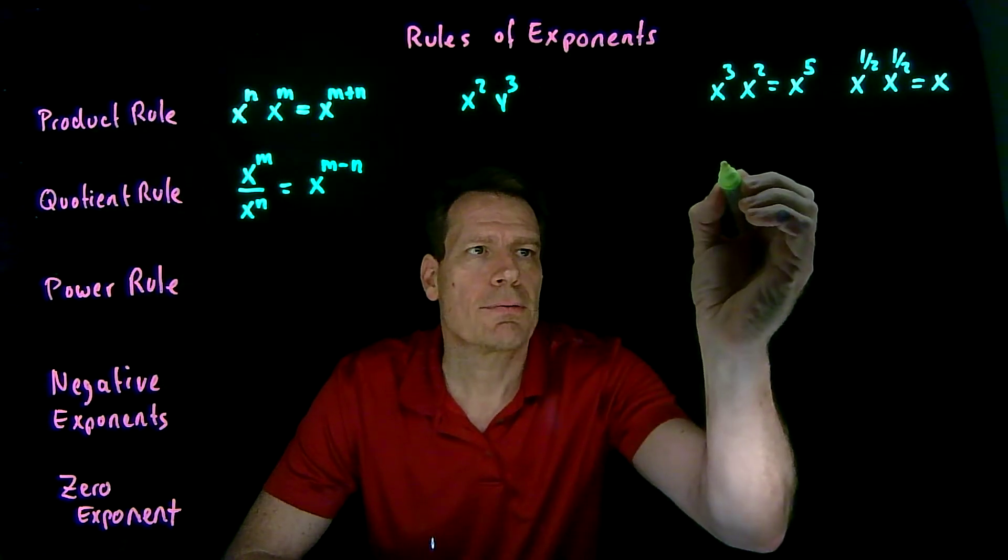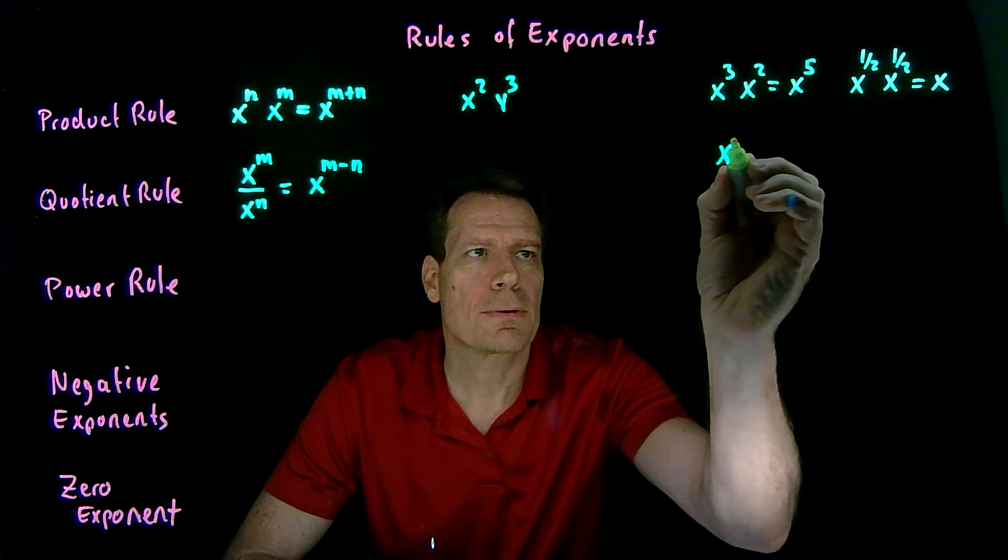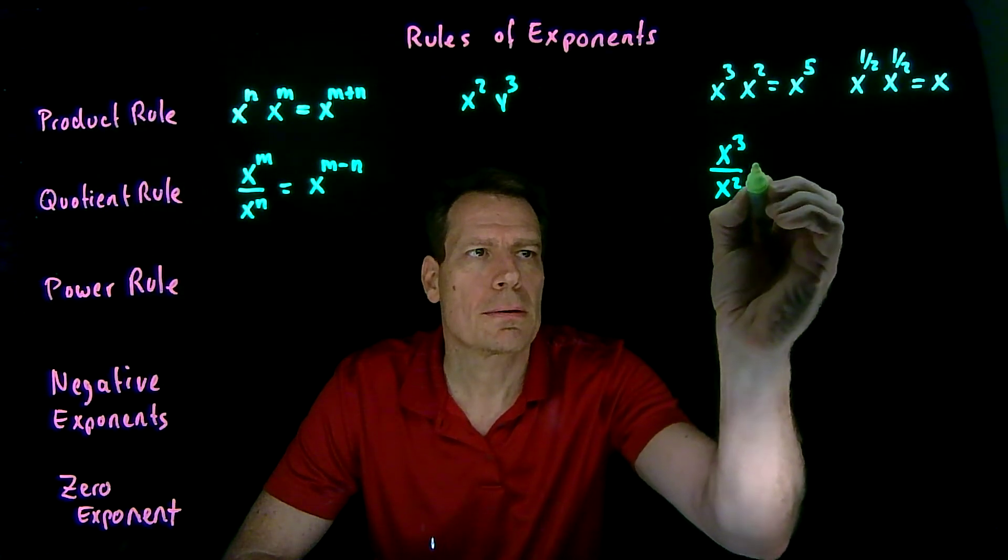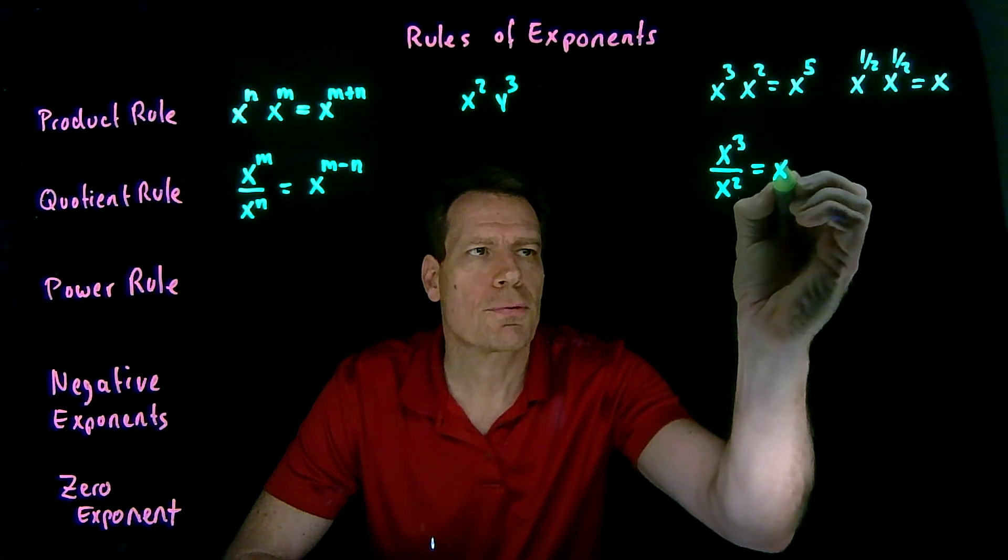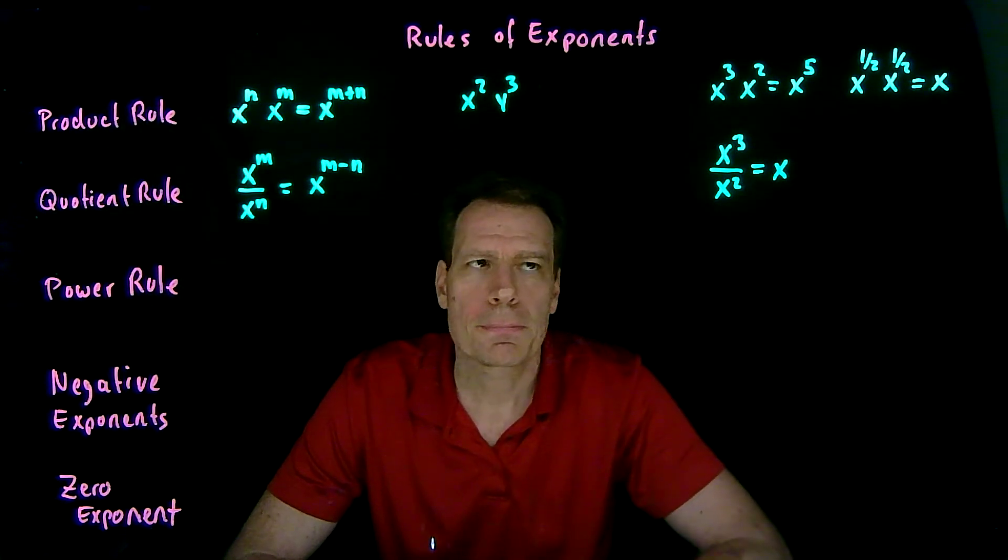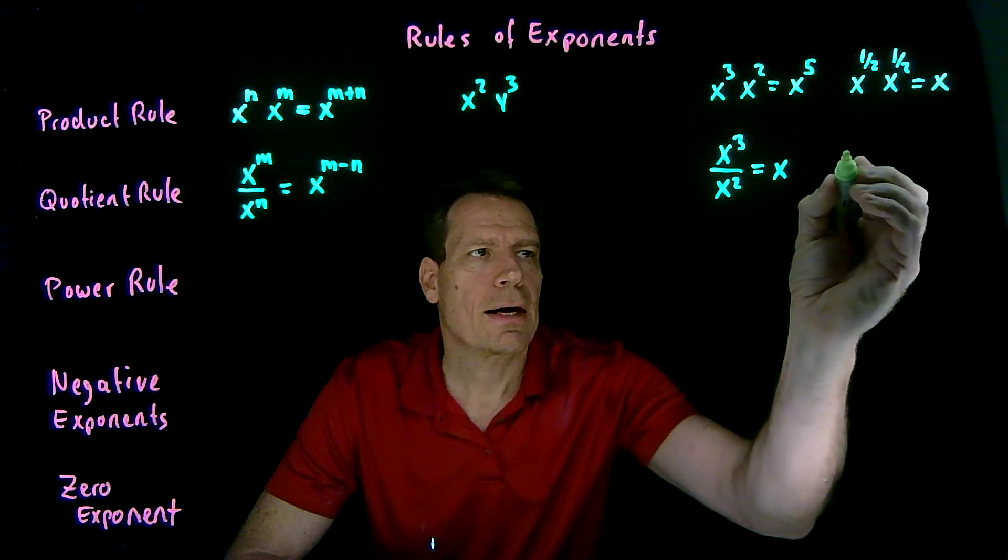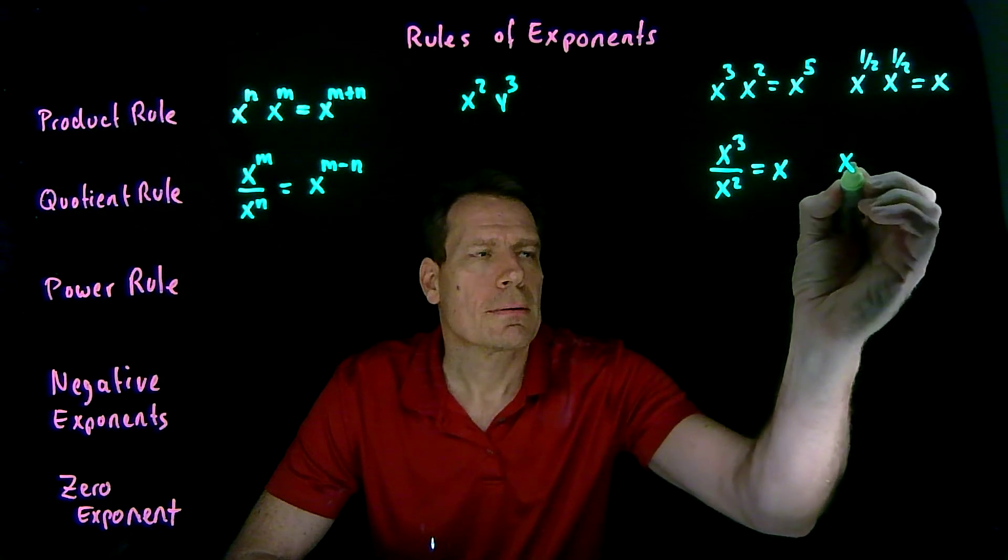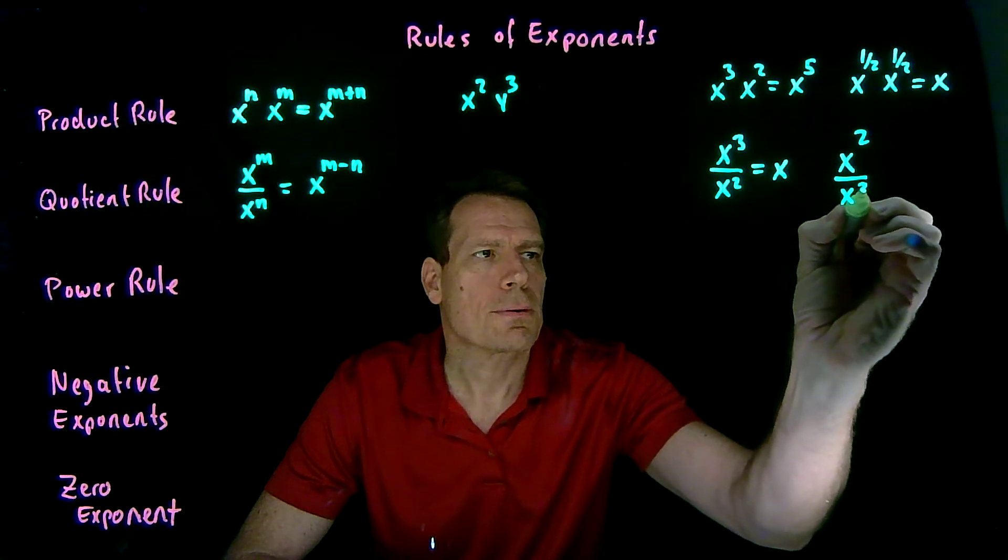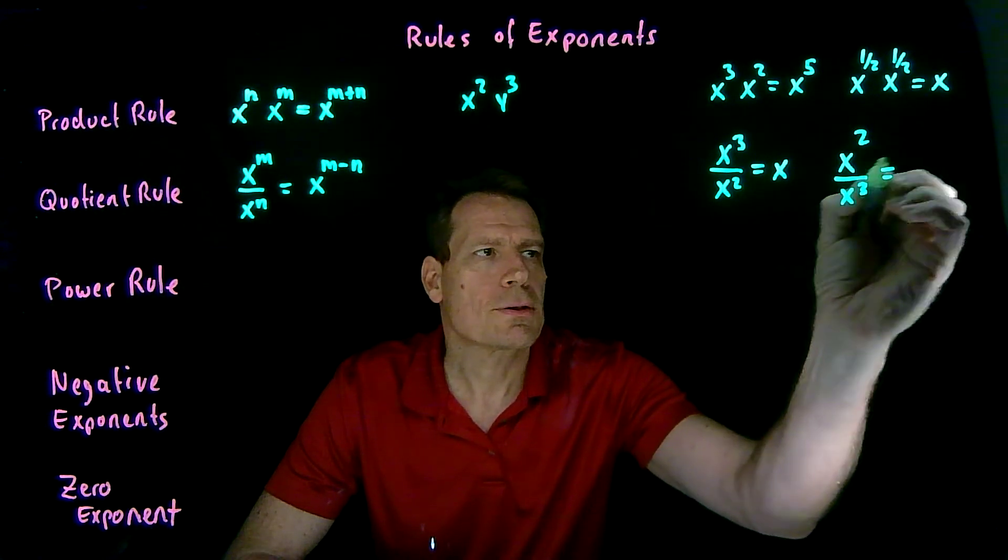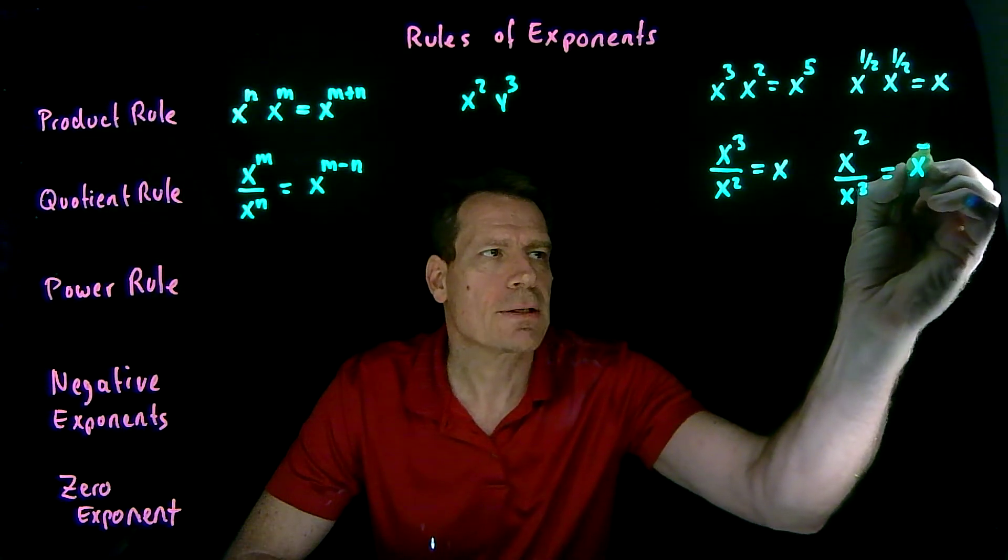So if you have x to the third divided by x squared, then that's going to be 3 minus 2, so x to the first, which again we don't show. Or if you have x to the second divided by x to the third, 2 minus 3 will give us x to the minus 1.